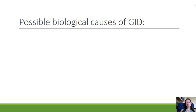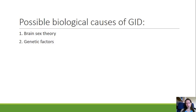We're going to look at two possible biological causes of gender identity disorder: brain sex theory, and genetic factors.